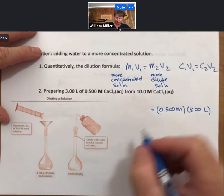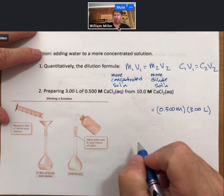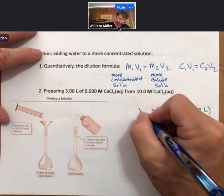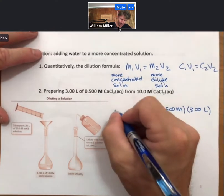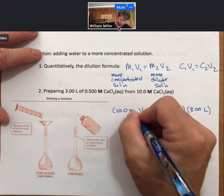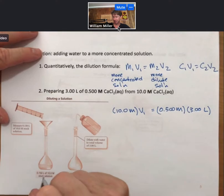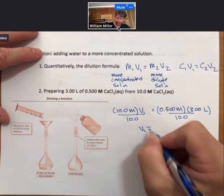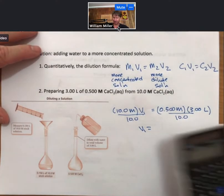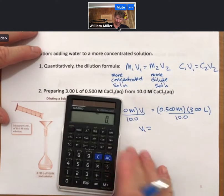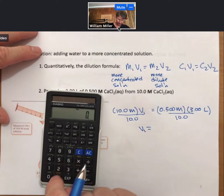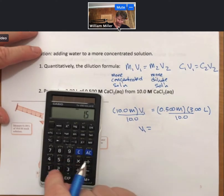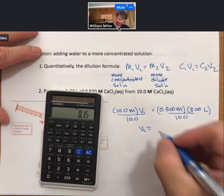And my M1 is going to be 10.0 molarity calcium chloride. We don't know our V1, like so. And then rearranging, and solving for the volume of our initial component. 0.5 times 3 divided by 10, 0.15.